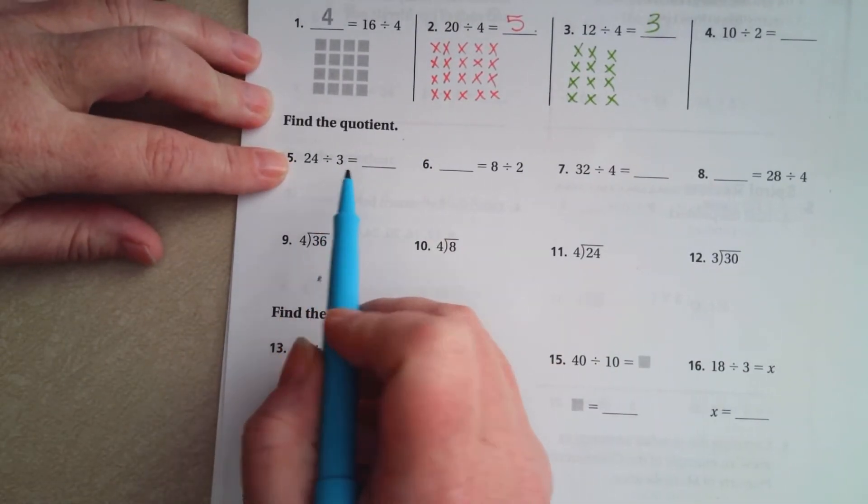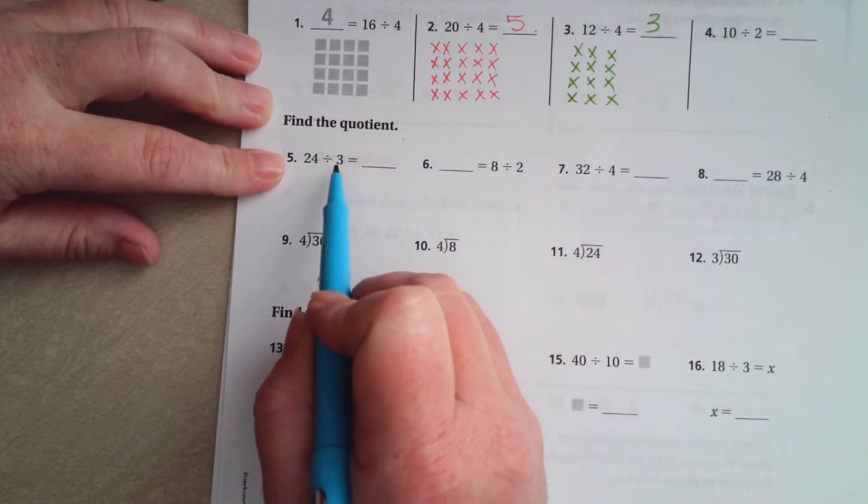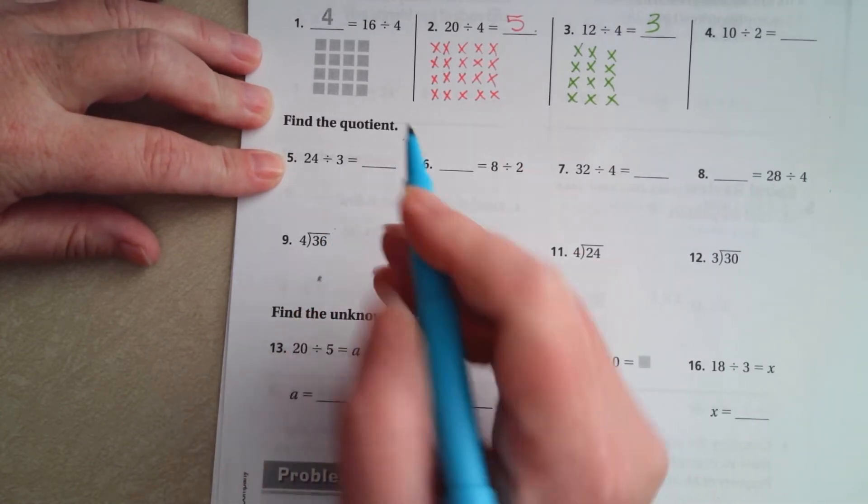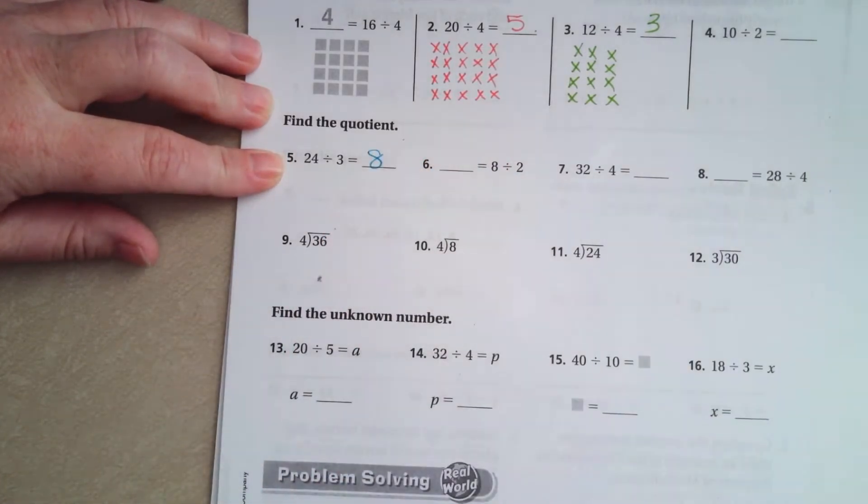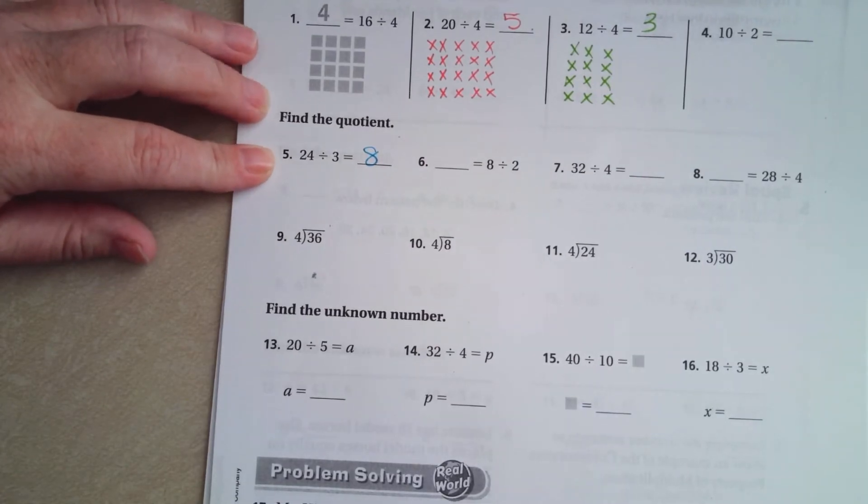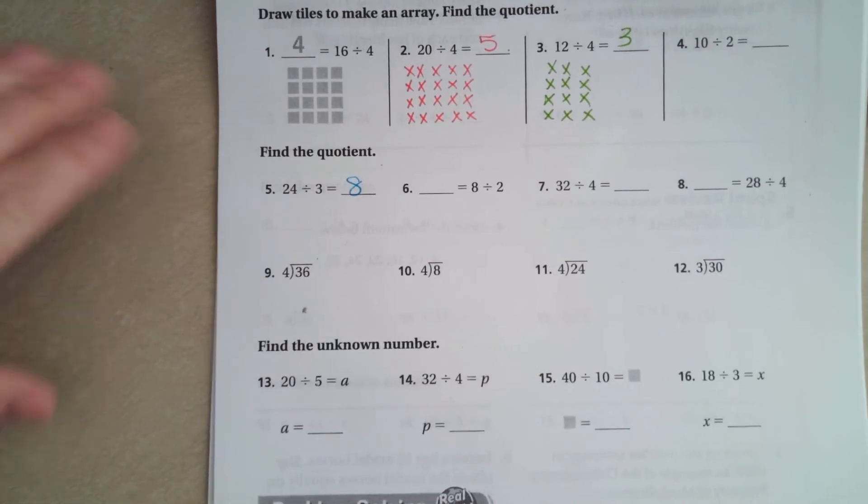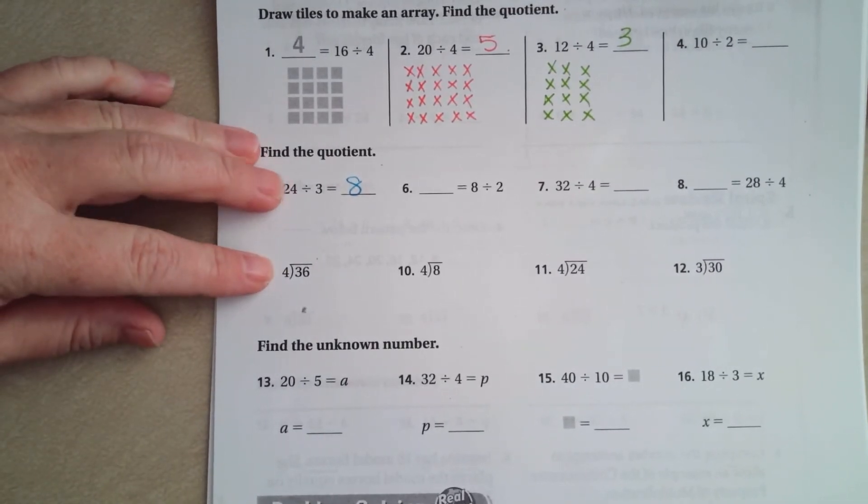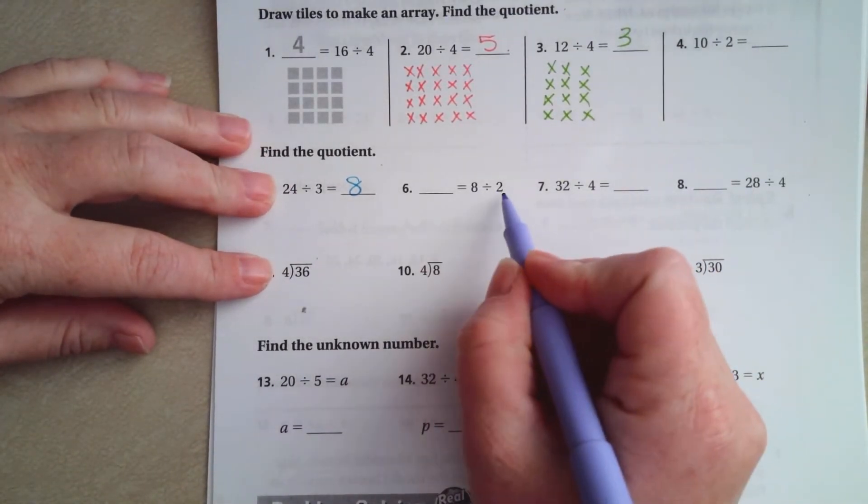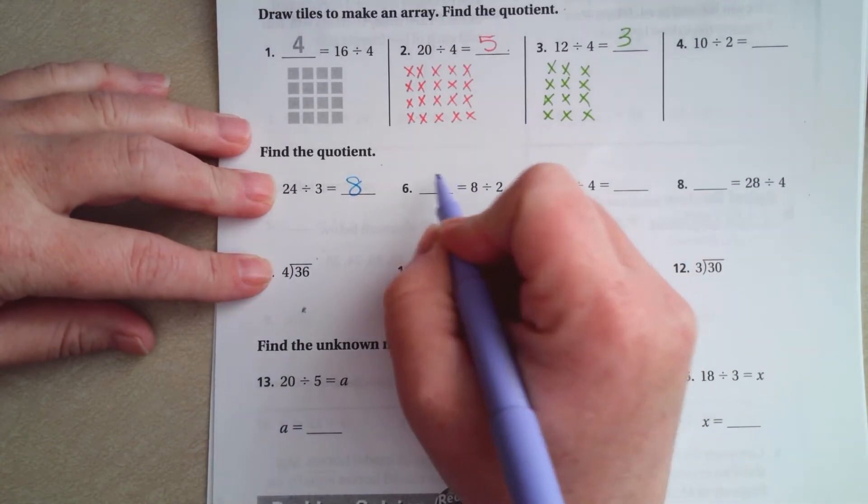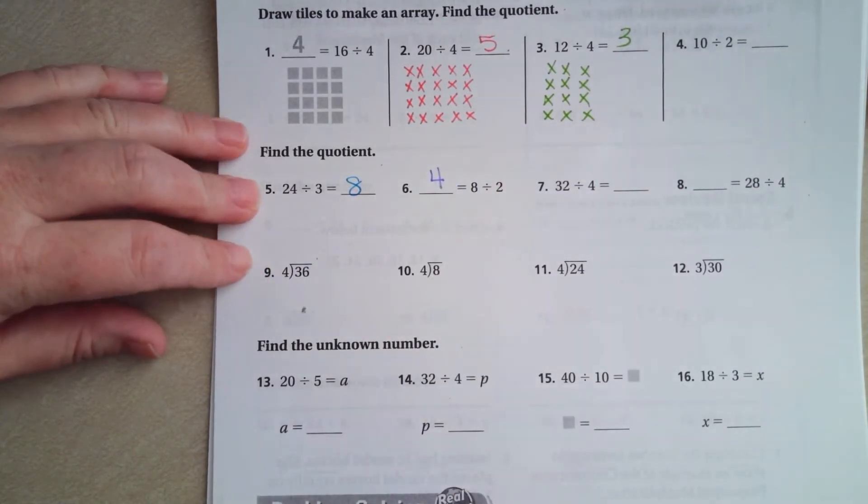So 24 divided by 3. I know that 3 times 8 is 24. It's just the opposite of a multiplication problem. So 3 times 8 is 24. 2 times what is 8? Well, 2 times 4 is 8.